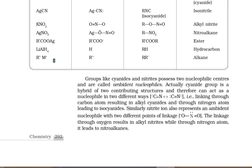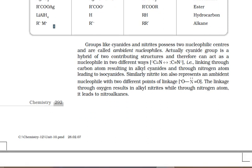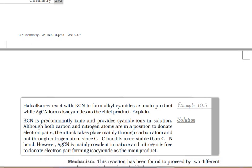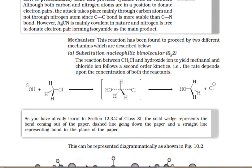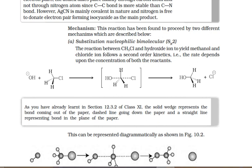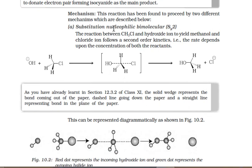Now we discuss SN1 and SN2 reactions. First: substitution nucleophilic bimolecular — SN2. S stands for substitution, N for nucleophilic, and 2 for bimolecular. Molecularity is the number of reacting species participating in a balanced chemical equation. If the reaction occurs in more than one step, the molecularity is determined by the slowest step.